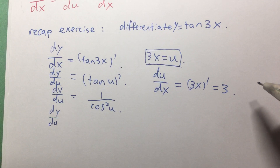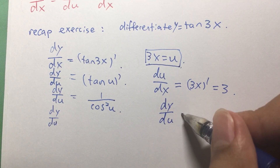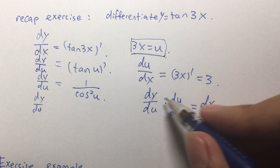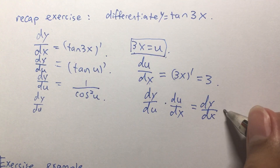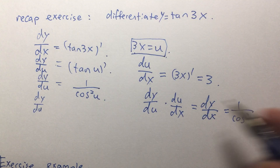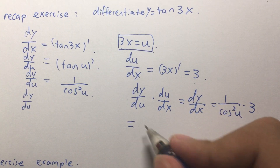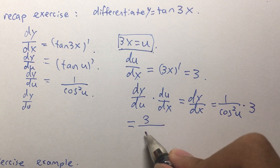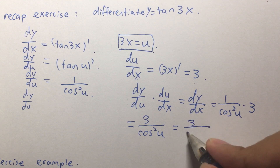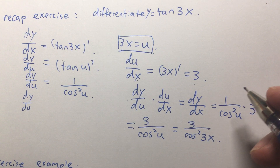We know that dy over du times du over dx equals dy over dx. And dy over du is 1 over cosine squared u, and du over dx is 3, so we need to multiply by 3. This gives us 3 over cosine squared u, which is equal to 3 over cosine squared 3x. And that is our dy over dx.